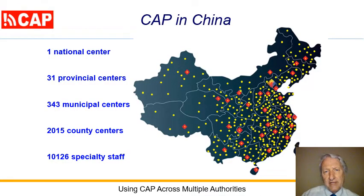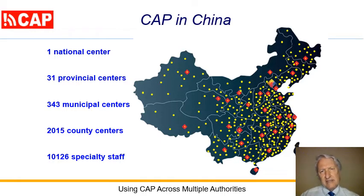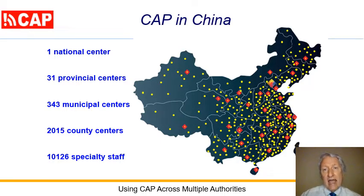China's CAP-enabled alerting gets warnings from different agencies and releases them to the public over television, radio, mobile, internet, and others. It includes one national, 31 provincial, 343 municipal, and 2,015 county centers. China's CAP newsfeed is aggregated into these global scale CAP alert hubs.